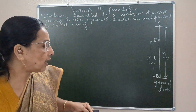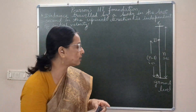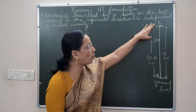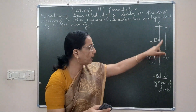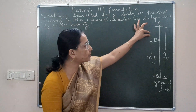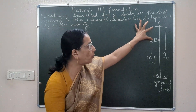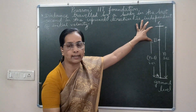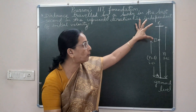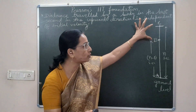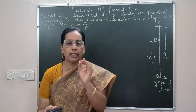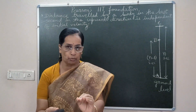Assume that a body is thrown from the ground and it goes up to a height of point C in n seconds. We have to find the distance travelled by the body in the last 1 second, and we have to show that this distance is independent of the initial velocity of throw.